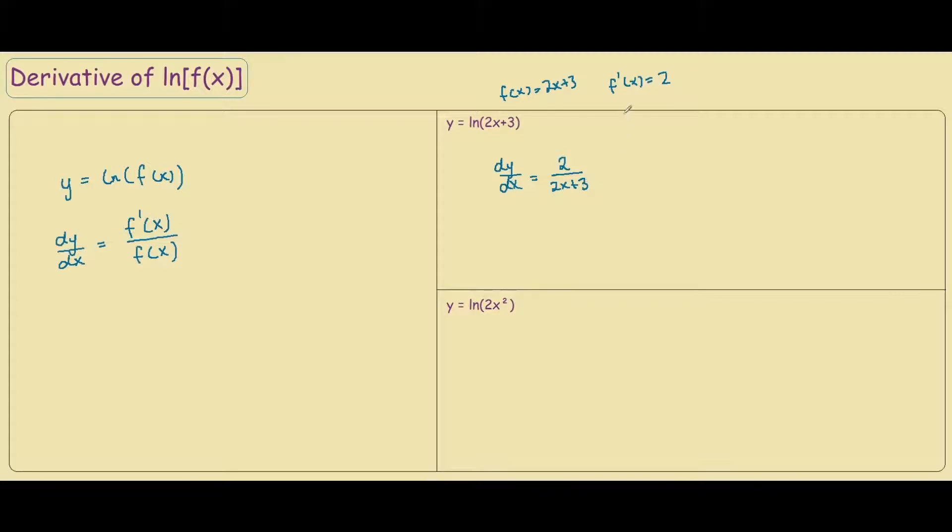You can also use the chain rule to prove this to yourself. So if we were to let u equals 2x plus 3, then we know du/dx equals 2.